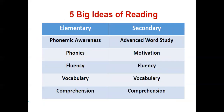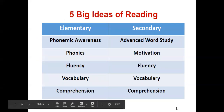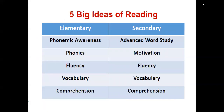The National Reading Panel in 2000 identified these as important areas of instruction. This chart looks at the five big ideas of reading in both elementary and secondary grades. In the elementary grades, the five big ideas build the foundational skills to learn to read. But in the secondary grades, the focus transitions into skills that support reading to learn. Notice that vocabulary is a skill that should be addressed across all grade levels.